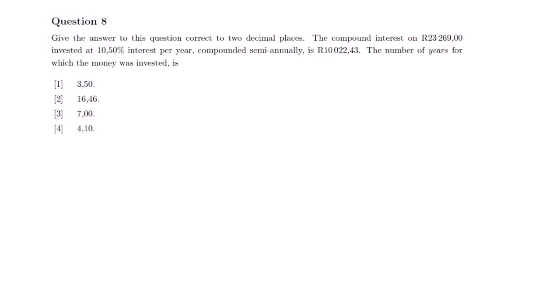This is question 8. Question 8 says: give the answer correct to 2 decimal places. The compound interest on $23,269 invested at 10.50% interest per year, compounded semi-annually, is $10,022.43. So it means that after investing this amount, the interest that was generated is $10,022.43. Remember that interest is the extra amount generated after investing at a particular interest rate.